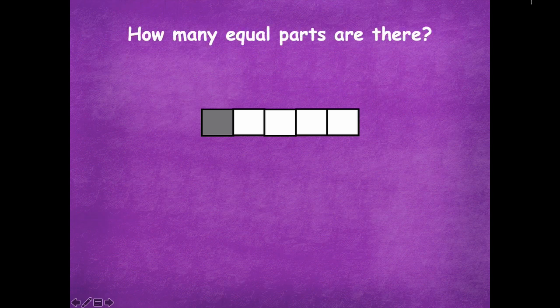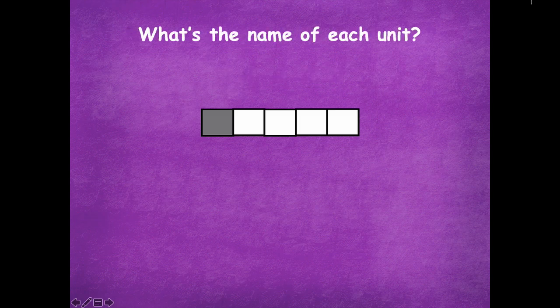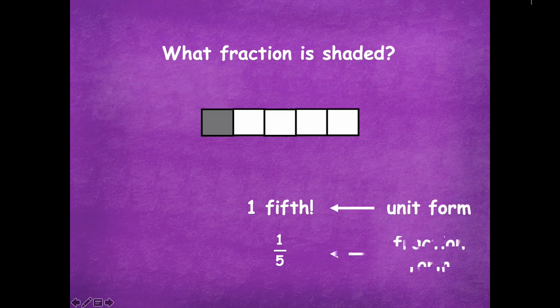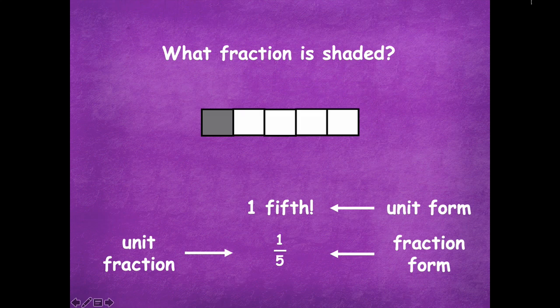All right, so how many equal parts are there for this shape? Five equal parts. What's the name of each unit? One fifth. What fraction is shaded? Go ahead and write that down on your dry erase board. Write it numerically in our fraction form. Yeah, so one fifth, you could write it numerically like this, one fifth. That's our fraction form. Remember the top number is how many parts for this one are shaded, and the bottom number is the total number of parts. So this is our unit fraction, because it's one part of the fraction is shaded.